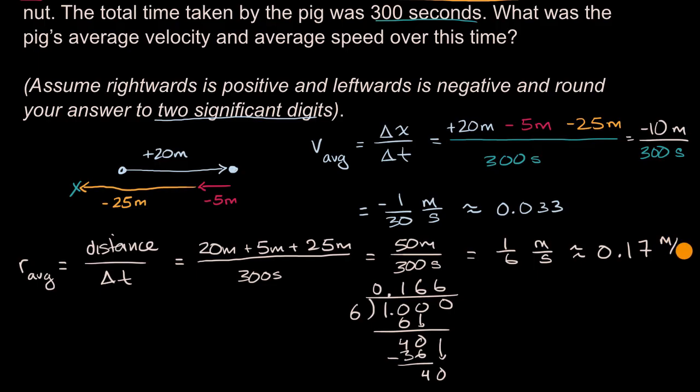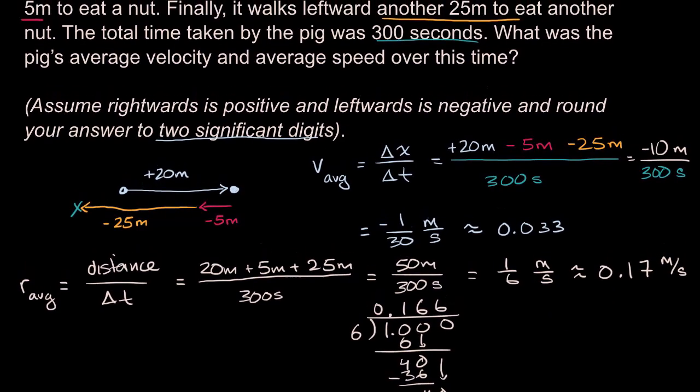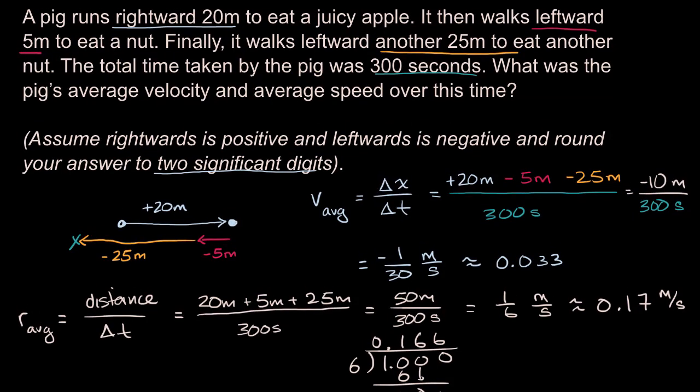0.17 meters per second. And we are done. We figured out the average velocity and the average speed.